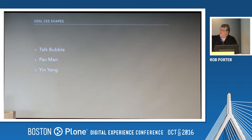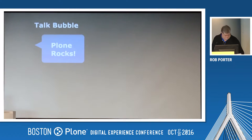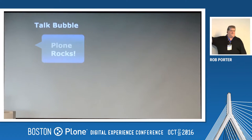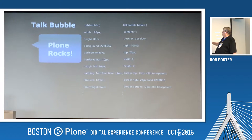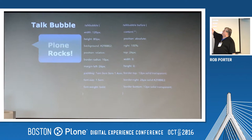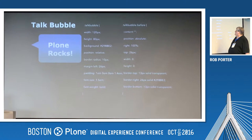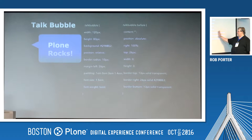Now we have some of those basic things, we can do these fun things — make a talk bubble, Pac-Man, Yin Yang. The talk bubble is pretty easy because we already know how to make the square with border radius. You set a border radius of like 10, then we make that triangle going to the left and pull it over. It's a rectangle, and then we make the triangle over here — it's a left one so it comes from the right-hand side. These two are transparent just like we did originally.